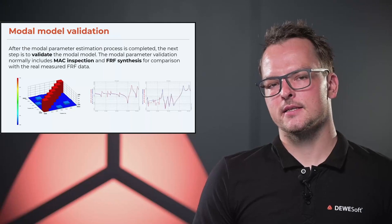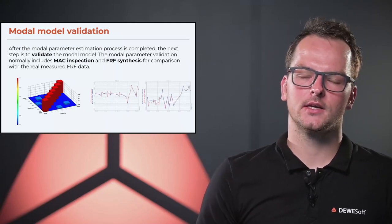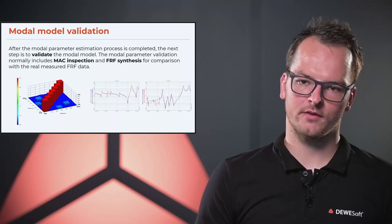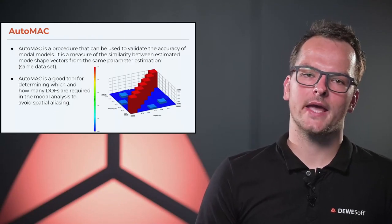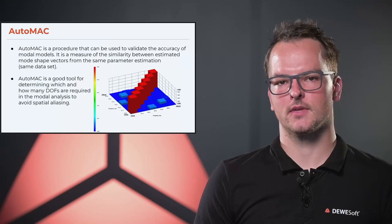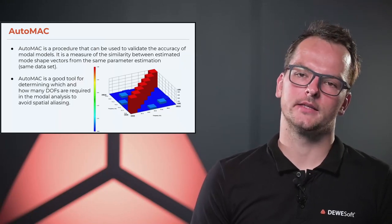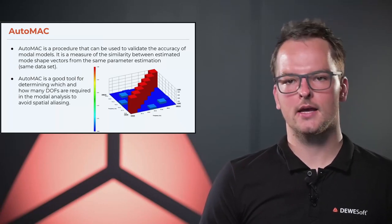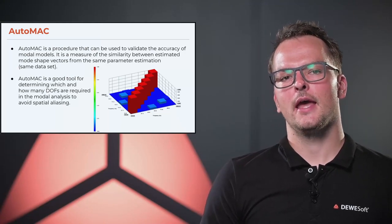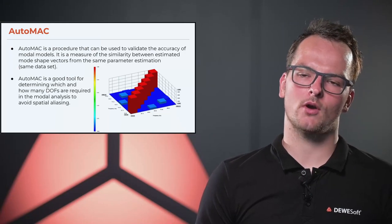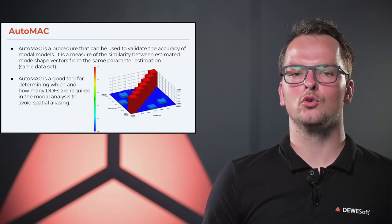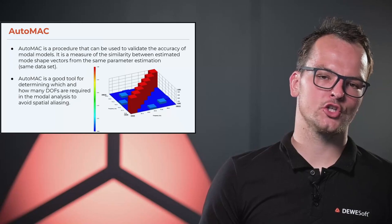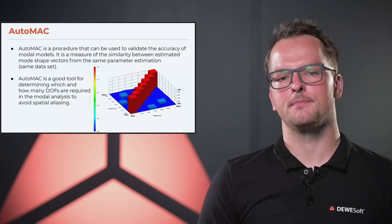Model validation usually includes MAC inspection and FRF synthesis for comparison with the real measured FRF data. In Devasoft we calculate the so-called AutoMAC matrix. AutoMAC is a procedure used to validate the accuracy of modal models — it is basically a measure of similarity between estimated mode shape vectors from the same parameter estimation. It is a good tool when trying to see if you measured at enough points to avoid spatial aliasing.